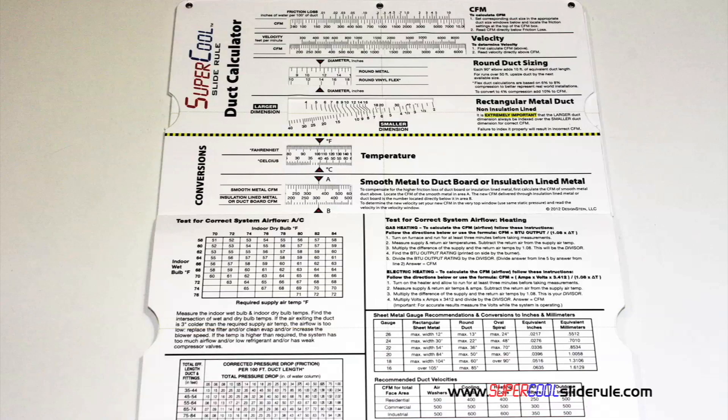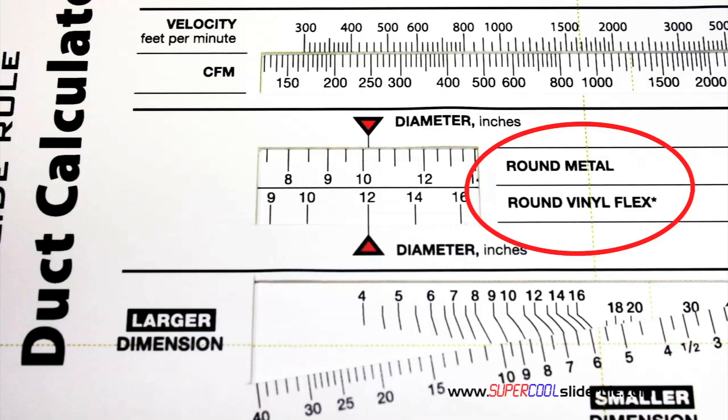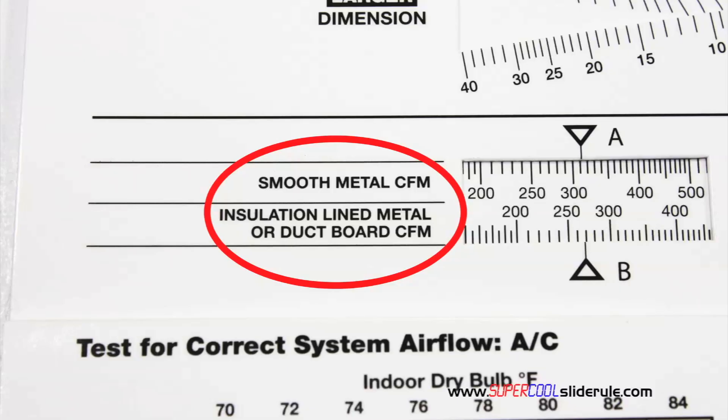Inside is packed with even more information. It performs sizing of both metal and flexible duct. It has the only direct reading conversion from smooth metal to insulation lined metal we've ever seen. The majority of technicians have never been taught that if the insulation is on the inside of the ductwork, you cannot size it with a regular duct calculator.